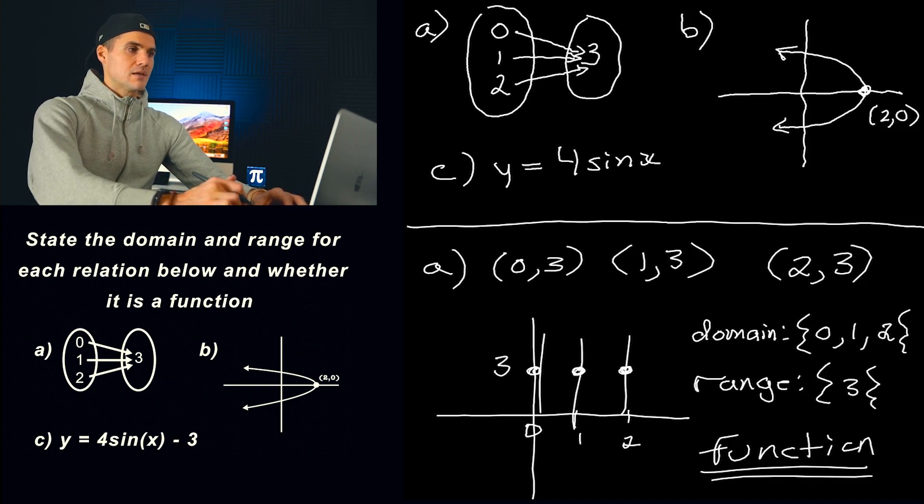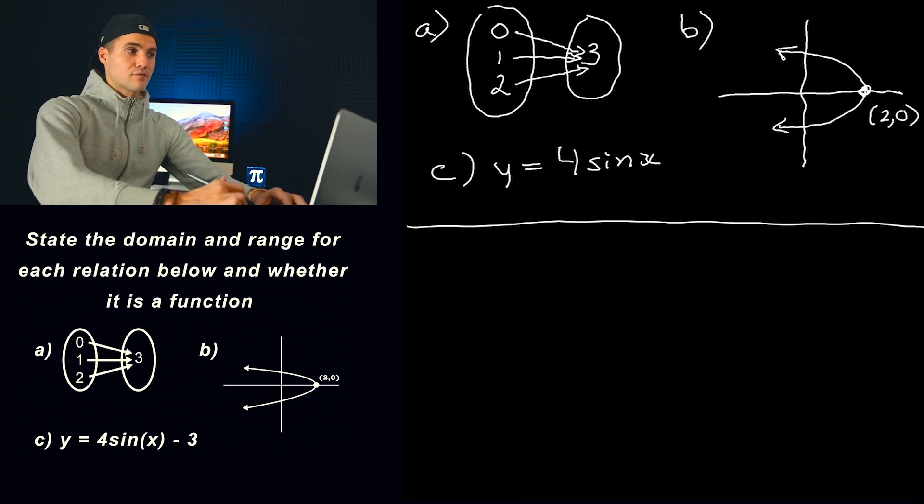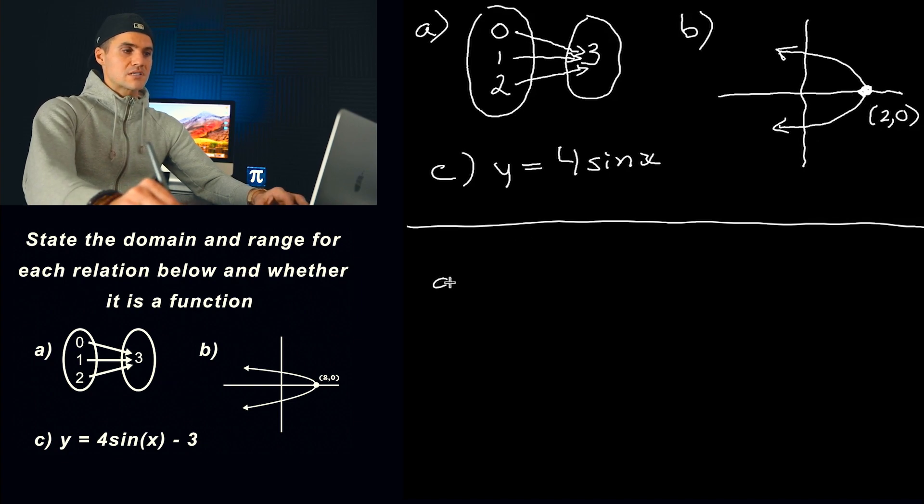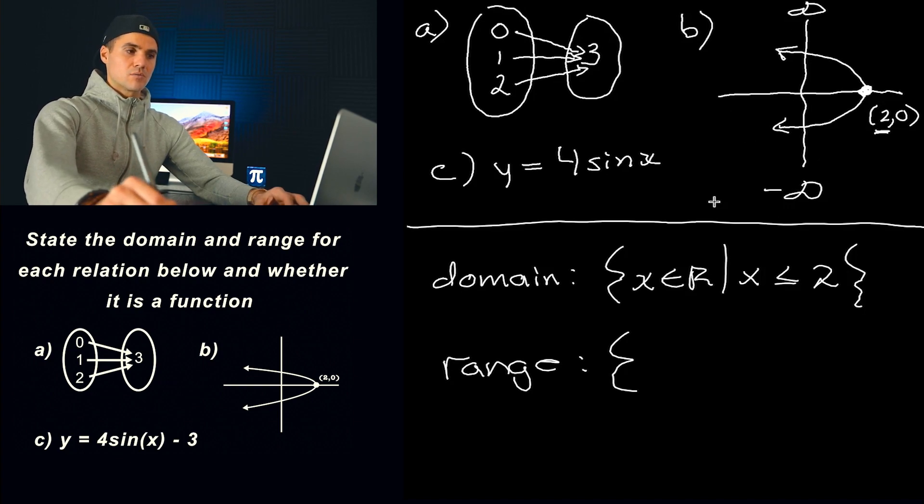Moving on to part B. Now in part B, notice that we already have the graph right here. It's a sideways parabola, has this vertex here at 2 and 0. So notice that the domain of that relation there, it's going to be, notice it can be any x value as long as the x values are less than or equal to positive 2. Less than or equal to, because it's all the x values to the left of this x value of 2. And then notice that the range, it could be any y values because this keeps going on forever. So basically, all the y values from negative infinity to positive infinity are going to be touched at some point. So it's basically y ∈ R like that.